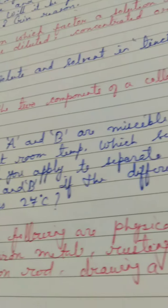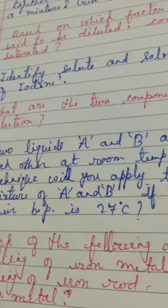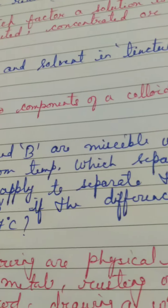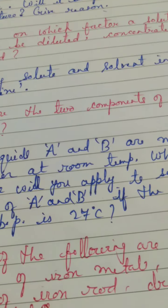Now, what are the two components of a colloidal solution? The two components of the colloidal solution ideally boys are called dispersed phase and dispersion medium. Dispersed phase is nothing but the solute part which remains held up in the dispersion medium which is the solvent part.